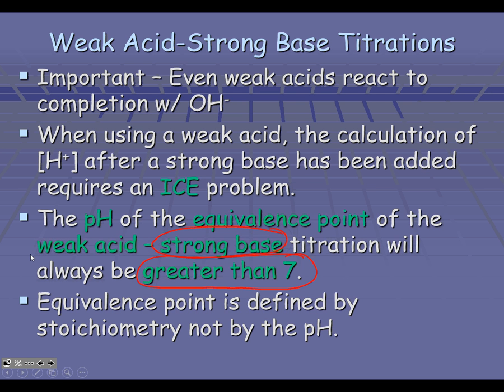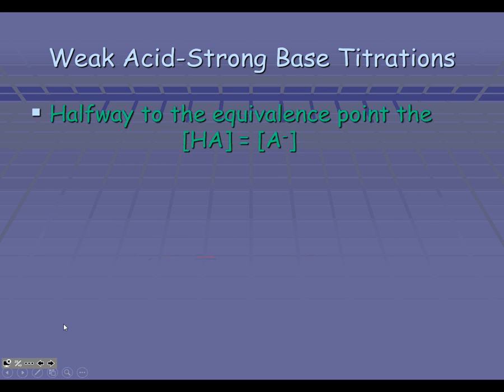Also important: the equivalence point is defined by the stoichiometry, not the pH. So you can't look at pH and know if you're at the equivalence point — you actually have to do the stoichiometry and see if your hydrogen equals your hydroxide. In a weak acid, strong base titration, something we didn't talk about before: halfway to the equivalence point, the weak acid will equal the A minus — the HA equals the A minus.